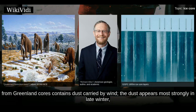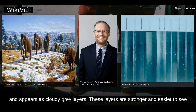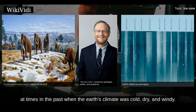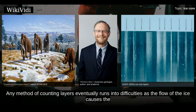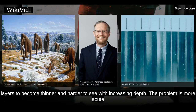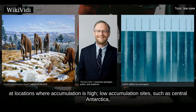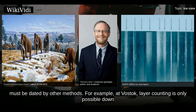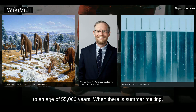Ice from Greenland cores contains dust carried by wind. The dust appears most strongly in late winter and appears as cloudy gray layers. These layers are stronger and easier to see at times in the past where the Earth's climate was cold, dry and windy. Any method of counting layers eventually runs into difficulties as the flow of the ice causes layers to become thinner and harder to see with increasing depth. Low accumulation sites such as central Antarctica must be dated by other methods; at Vostok, layer counting is only possible down to an age of 55,000 years.